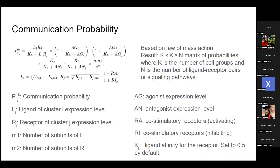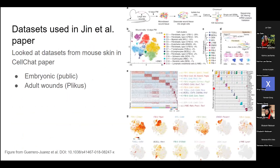They also do a little permutation — not a thousand times, but a hundred by default — to get a p-value for the communication probability. Similar to CellPhoneDB, they shuffle the labels of all cell types, look at the distribution, and determine the p-value for the communication probability. Doing a hundred instead of a thousand iterations is much faster.